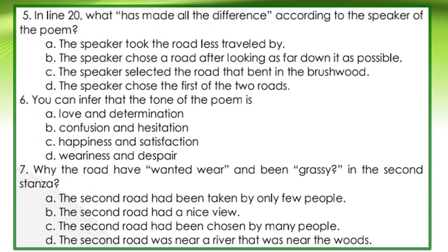Question 5: In line 20, what has made all the difference according to the speaker of the poem? A. The speaker took the road less traveled by. B. The speaker chose the road after looking as far down it as possible. C. The speaker selected the road that bent in the brushwood. D. The speaker chose the first of the two roads. Question 6: You can infer that the tone of the poem is A. Love and determination. B. Confusion and hesitation. C. Happiness and satisfaction. Or D. Weariness and despair.